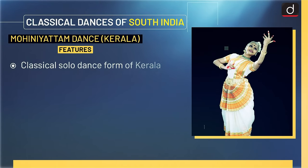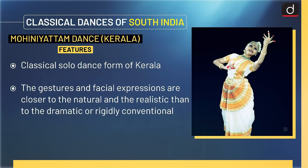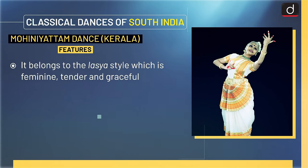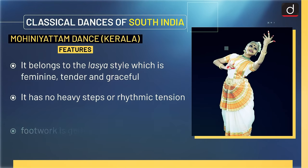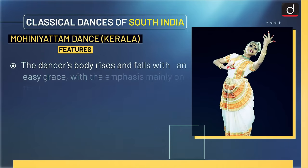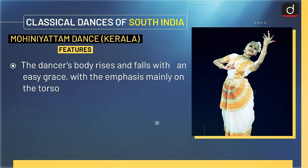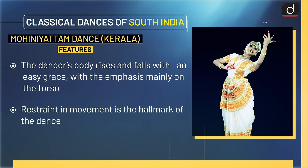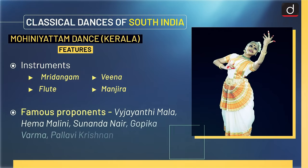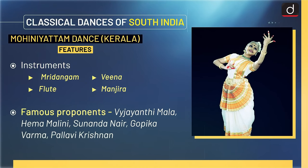Mohini Yattam is a classical solo dance form of Kerala. The gestures and facial expressions are closer to the natural and realistic than to the dramatic or rigidly conventional. It generally narrates the story of the feminine dance of Vishnu. It belongs to the Lassya style — feminine, tender and graceful — with no heavy steps or rhythmic tension. The footwork is gentle, soft and sliding, and the dancer's body rises and falls with easy grace, with emphasis mainly on the torso. Restraint in movement is the hallmark of the dance. Instruments used are Mridangam, Veena, Flute and Manjira. Famous proponents are Vyjayanthimala, Hemamalini, Sunanda Nayar, Gopika Varma and Pallavi Krishnan.